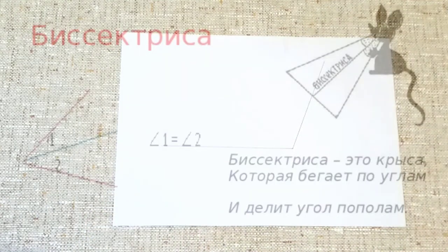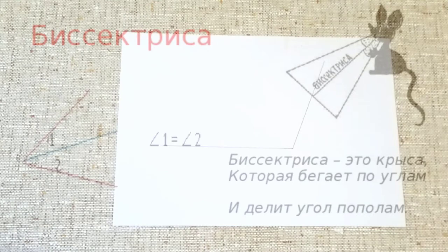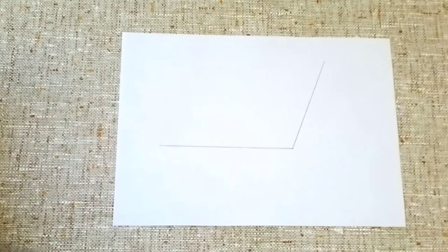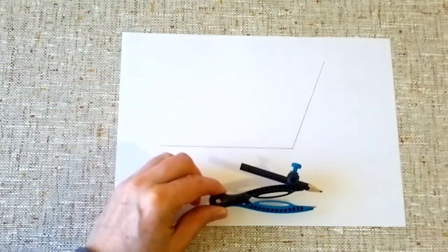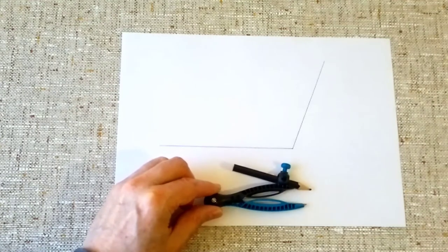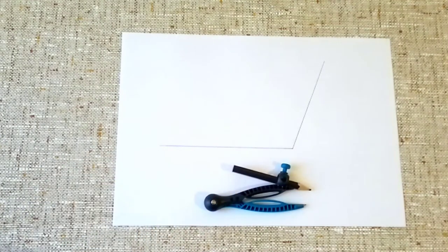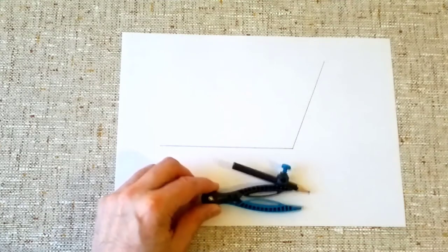Если кто учился в советской школе, то помнит: бисектриса – это такая крыса, которая бегает по углам и делит угол пополам. Для этого нам понадобится циркуль, и при помощи этого инструмента, линейки и карандаша мы сейчас построим бисектрису.